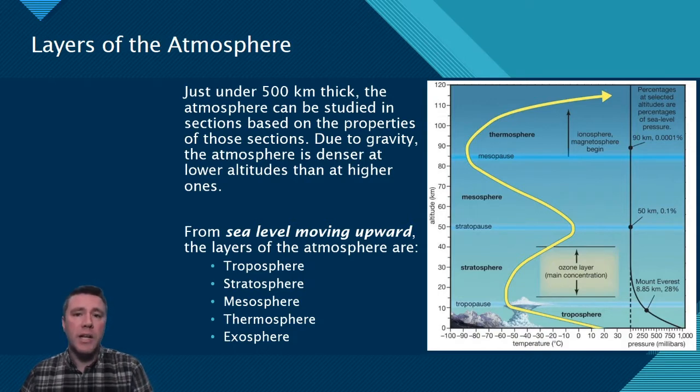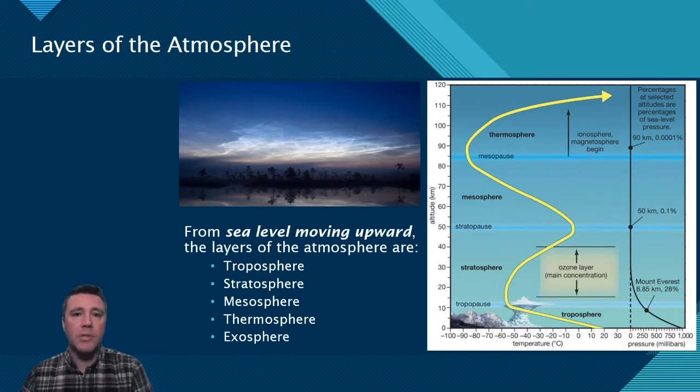The next layer is the mesosphere. The temperature in this layer follows the same pattern as the troposphere, getting colder with increasing altitude. This is the highest layer where clouds, noctilucent clouds, can form, and is also where most incoming meteors burn up.